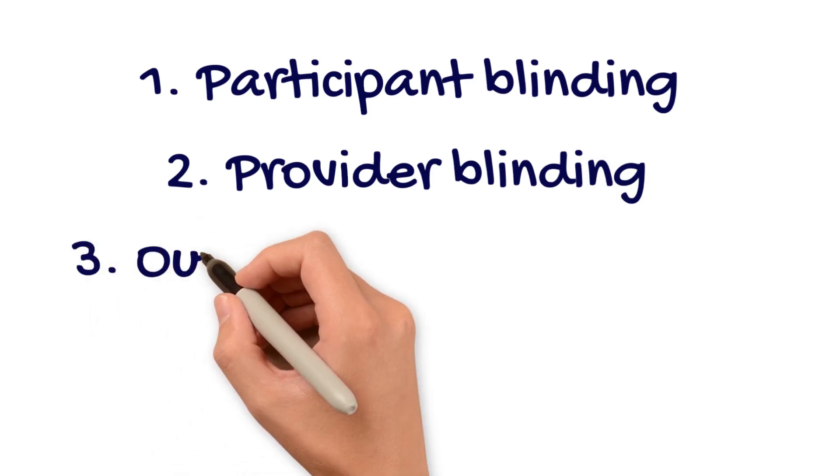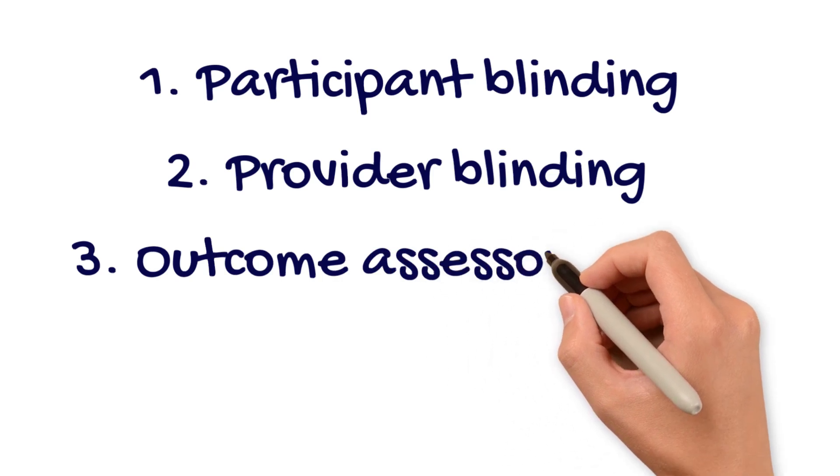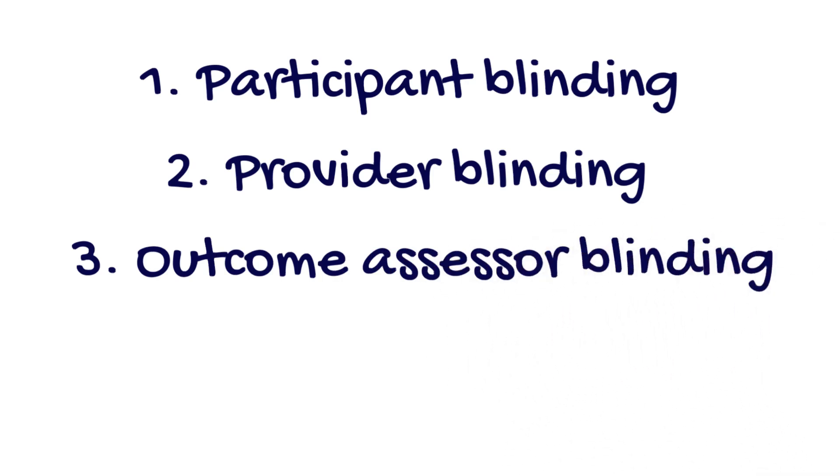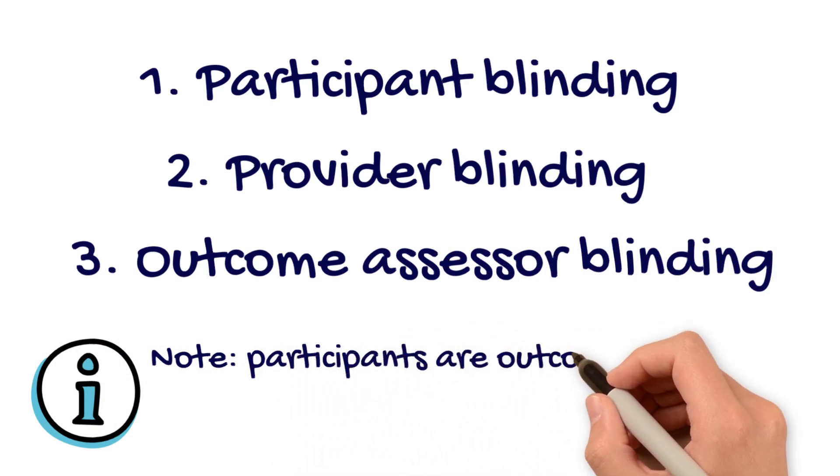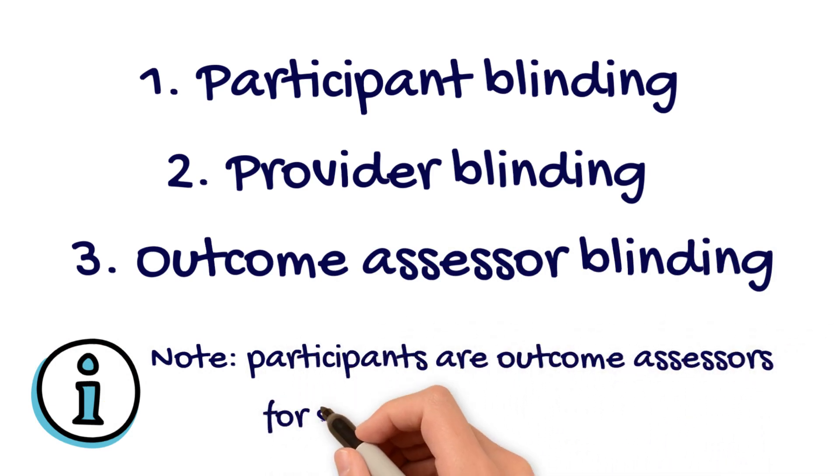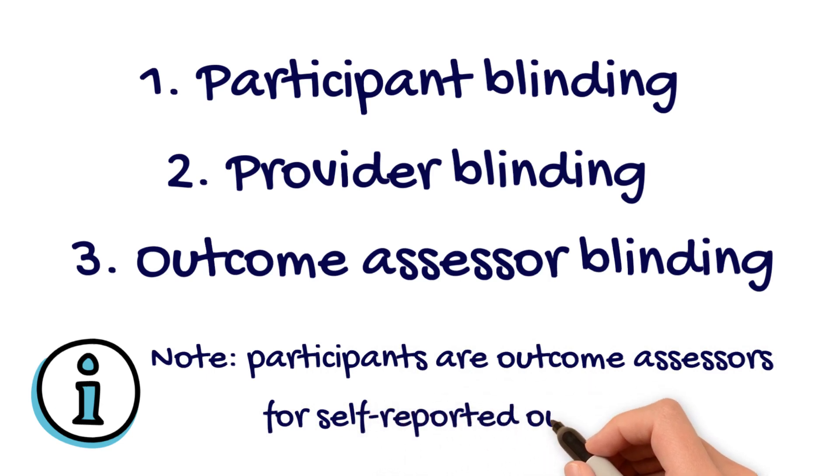Outcome assessor blinding means that the individuals measuring the outcomes are unaware of which treatment the participants received. It is important to note that when self-reported outcomes such as pain and disability are measured using questionnaires that the participants filled out themselves, the participant is the outcome assessor.